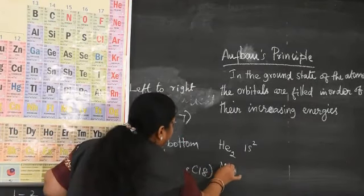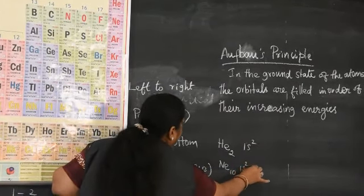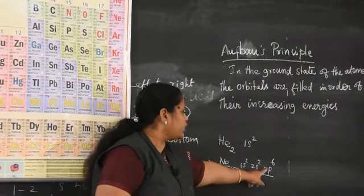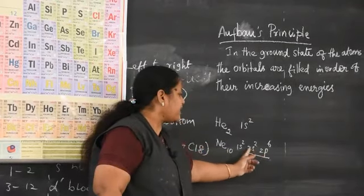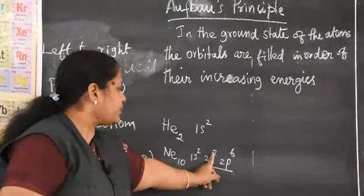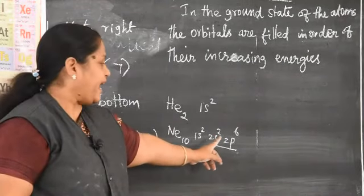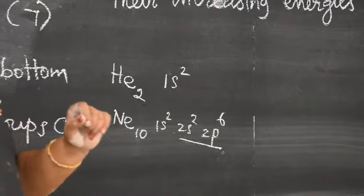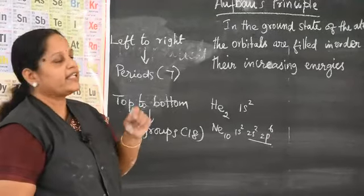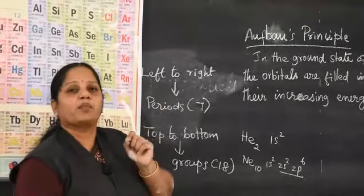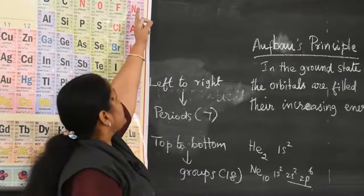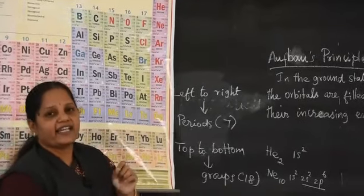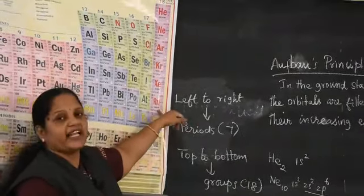For neon (Z=10): 1s², 2s², 2p⁶. The outermost shell (2s²2p⁶) has 8 electrons — completely filled. That is why it is chemically inactive, called an inert gas. In the modern periodic table, these are placed in the 18th group and are called noble gases or inert gases. Radon is radioactive; all others are gases.